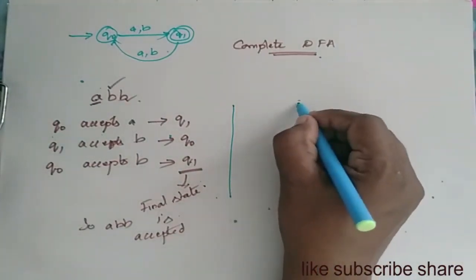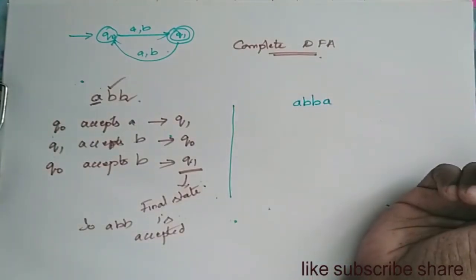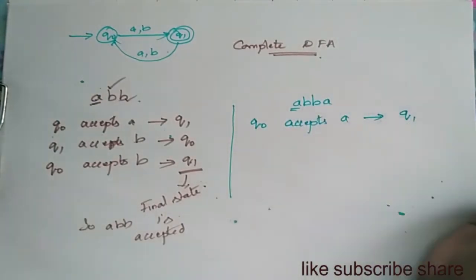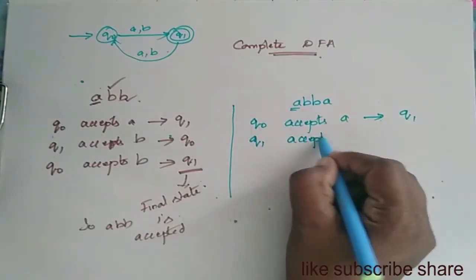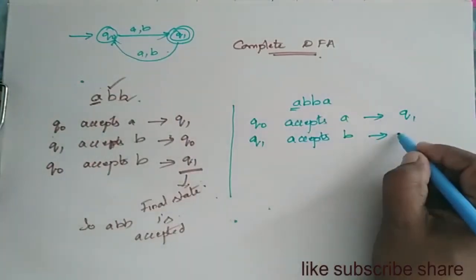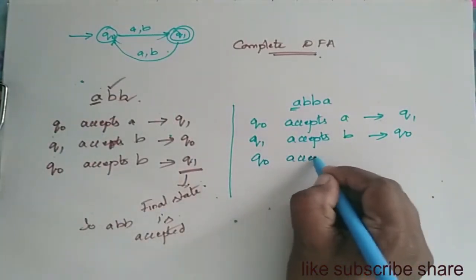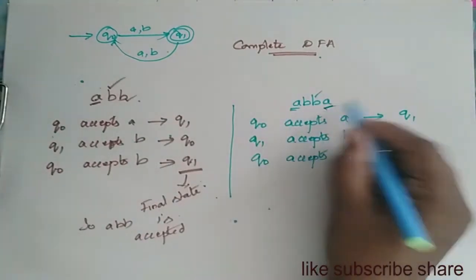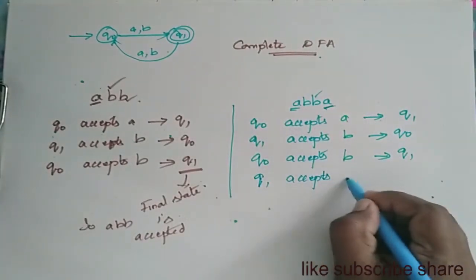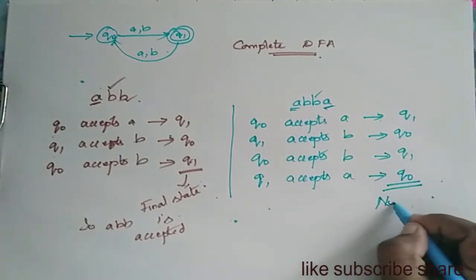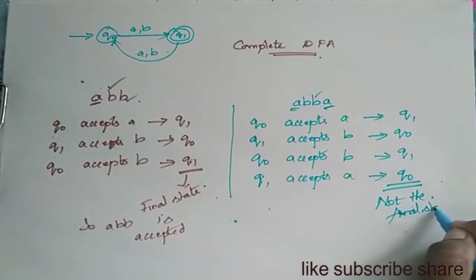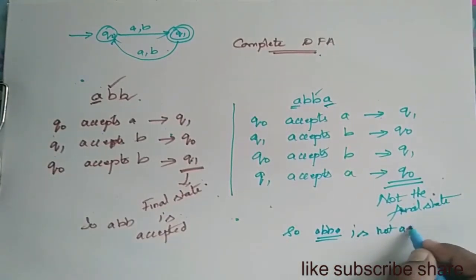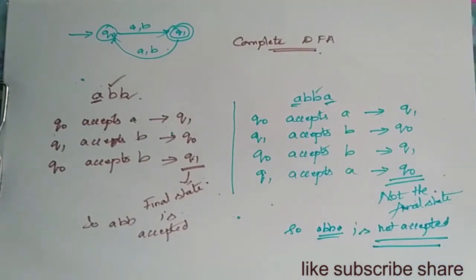Now let us consider another example: ABBA. Q0 accepts A and moves to Q1. Q1 accepts B and moves to Q0. Q0 accepts B and moves to Q1. Q1 accepts A and moves to Q0. The string does not reach the final state, so ABBA is not accepted.